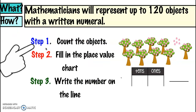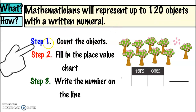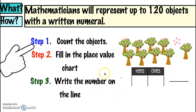Mathematicians, that was our lesson representing numbers — representing up to 120 objects with a written numeral. First, we count the objects. Second, we fill in the place value chart. And our last step, we wrote the number on the line.